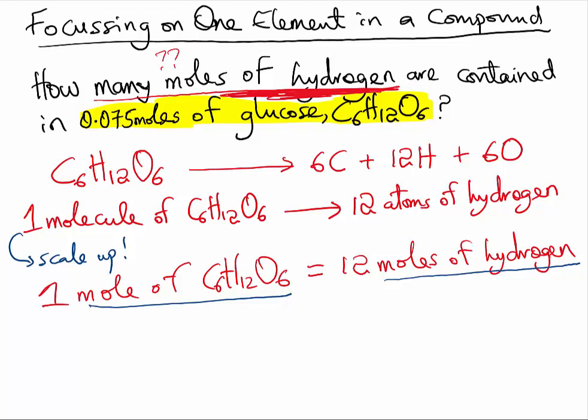Now it is very easy to solve this problem. Because if you have 0.075 moles of glucose, you can use the relationship that we just found as a conversion factor.